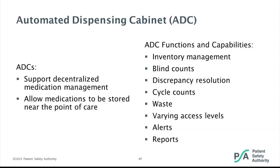Users must perform a blind count when accessing controlled substances. If a discrepancy is created, the expectation is that a cycle count will be performed and the discrepancy resolved with an appropriate reason. A resolution reason is required — the user can select a pre-built option or type in a reason — and all resolutions require a witness. A waste reason is also required and all controlled substance waste requires a witness.